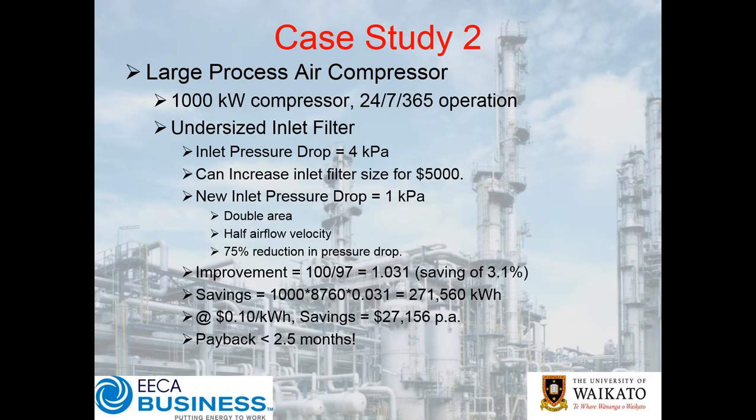What does that do in terms of savings? You might think it's pretty minuscule — 100 over 97, so around a 3.1% saving. But remember, that's on a 1 megawatt unit at 10 cents a kilowatt hour — it's $27,000 a year. And we only had to install a slightly bigger inlet filter.